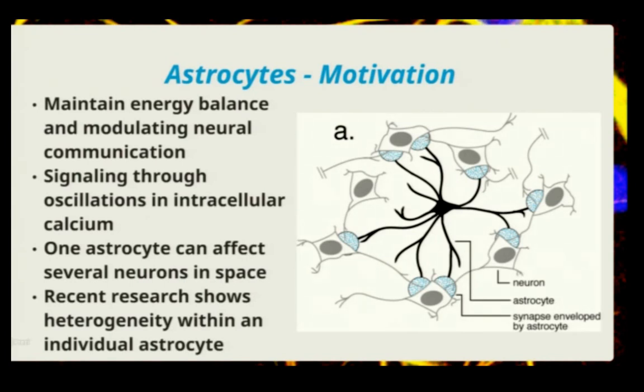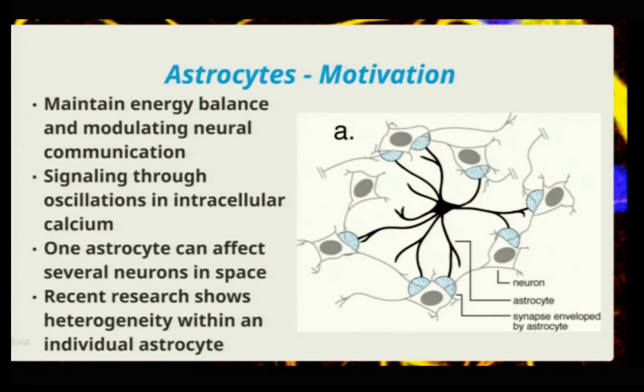Astrocytes carry out most of their operations through changes in concentration of intracellular calcium. They can affect multiple cells, and recent advances in calcium imaging have shown that individual astrocytes can display different levels of calcium within the cell itself.